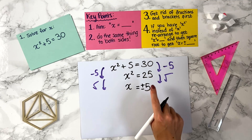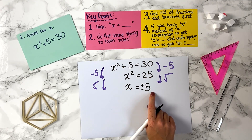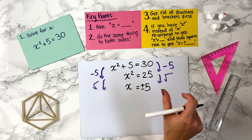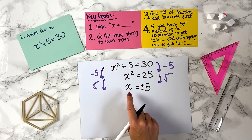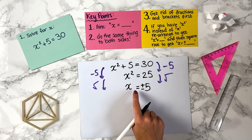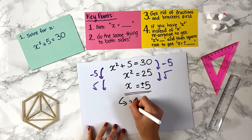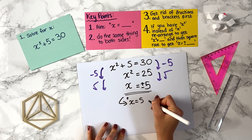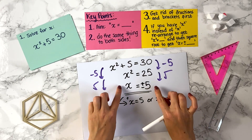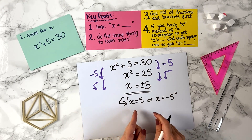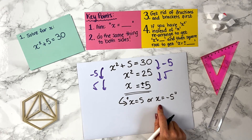This is because both 5 squared and minus 5 squared are 25. So it's really important: if you have x squared equals something and you take the square root, you'll end up with two answers. You'll have x equals plus 5 or x equals minus 5. You can write it as x equals ±5 or write out x equals 5 or x equals minus 5 as a full sentence.